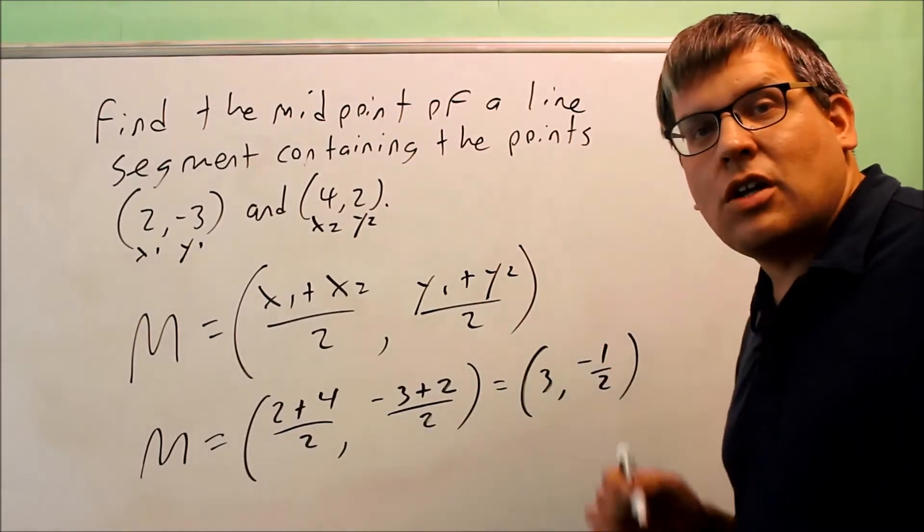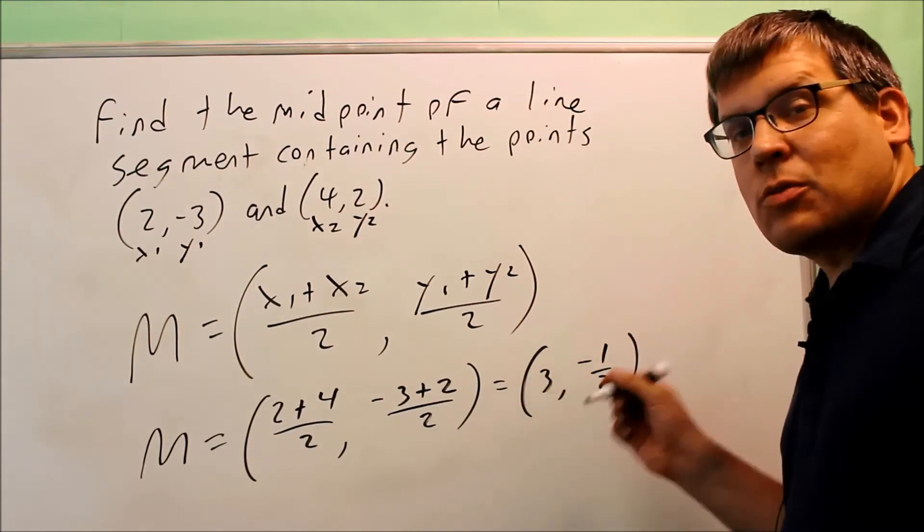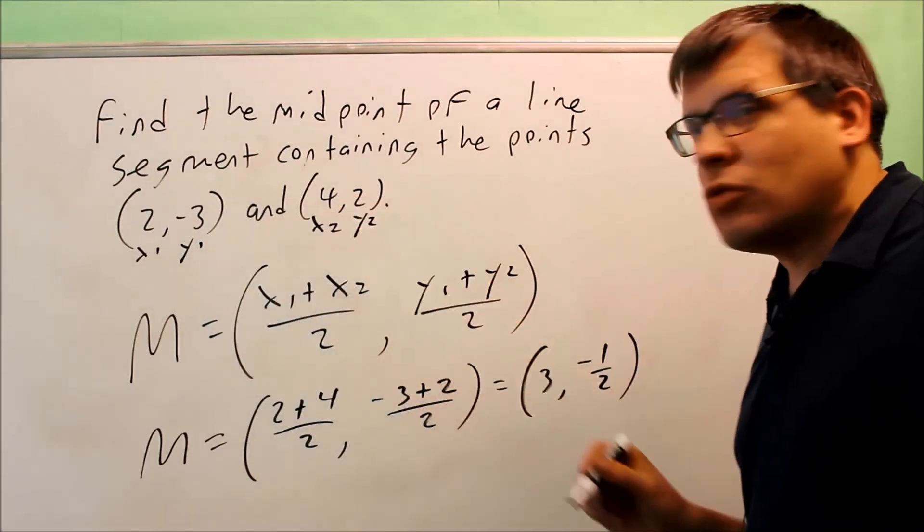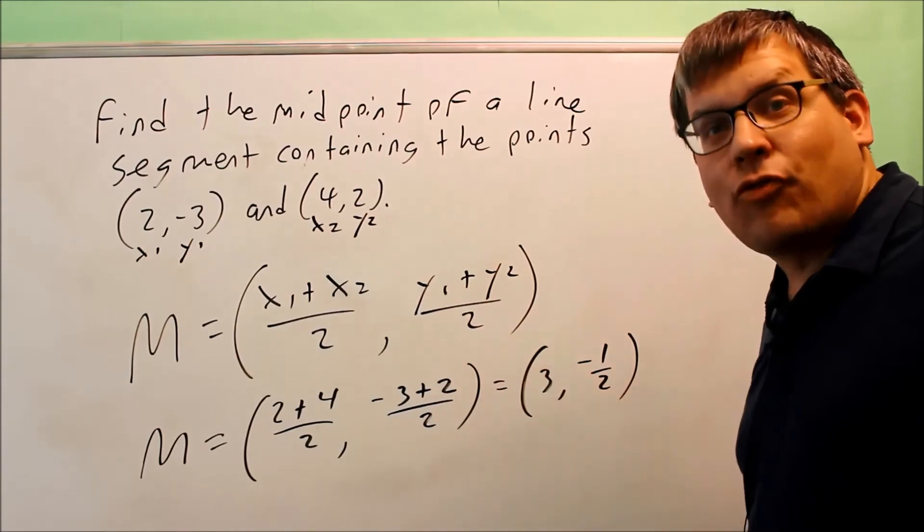And so 3 and negative 1 half, that would be the midpoint, that's the point that's exactly halfway between 2, negative 3 and 4, 2.